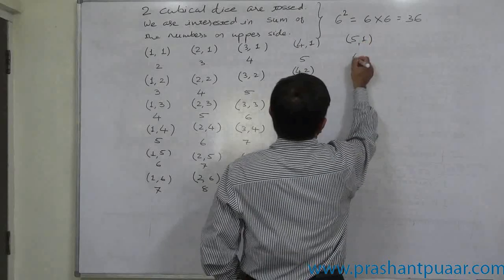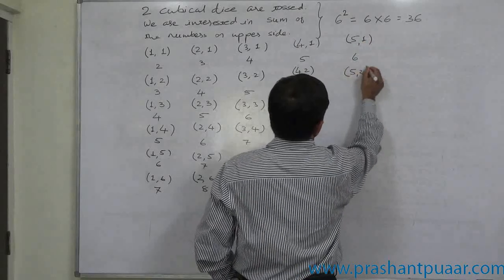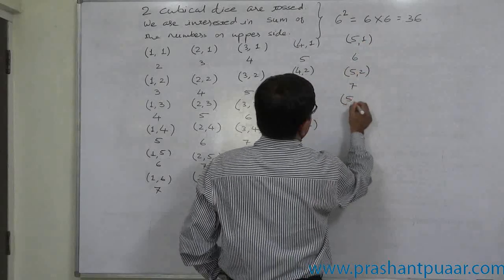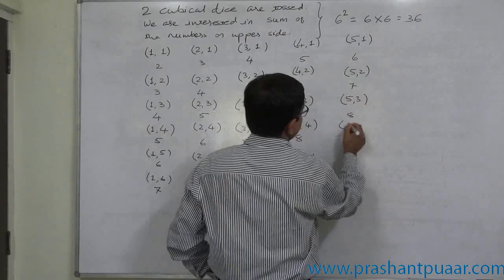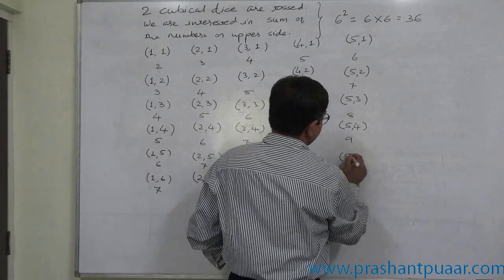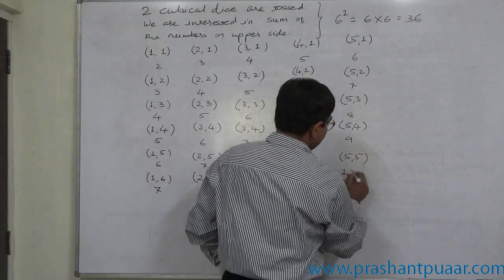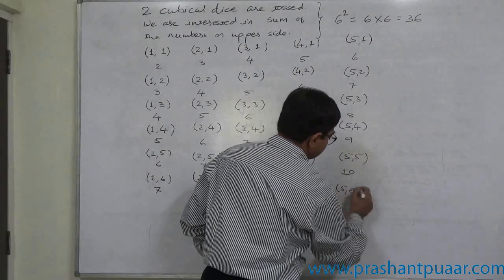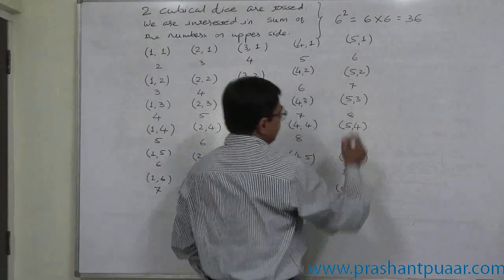Five, one: six. Five, two: seven. Five, three: eight. Five, four: nine. Five, five: ten. Five, six: eleven.